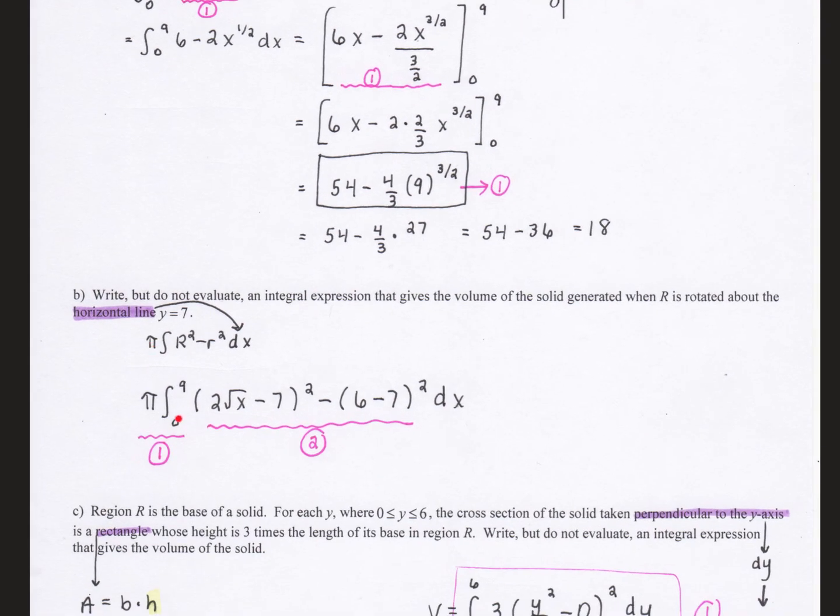My limits are from 0 to 9, the x interval of the region. This is my outer radius, and I have to subtract my axis of rotation, which is the 7, minus my inner radius is 6, and again, minus that 7. So this is my outer radius squared minus my inner radius squared.